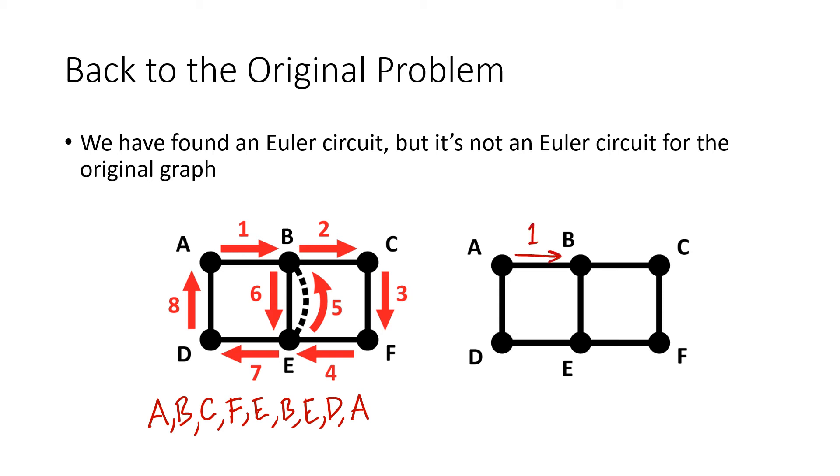That means that first we would go from A to B, second we would go from B to C, third we would go from C to F, fourth we would go from F to E, fifth we would go from E up to B. Sixth, that's our retracing, right? So we would walk along that same edge and retrace our steps, and then seventh we go from E to D, and then eighth we go from D up to A.